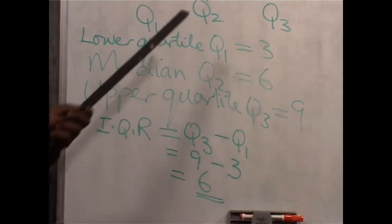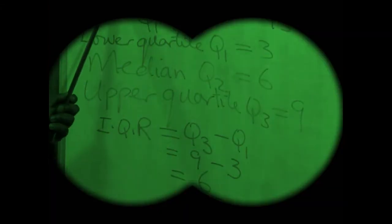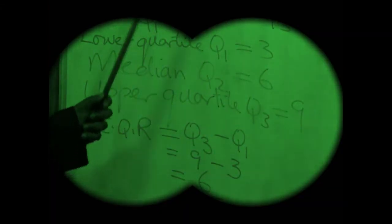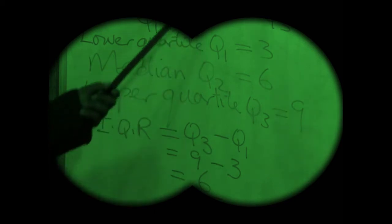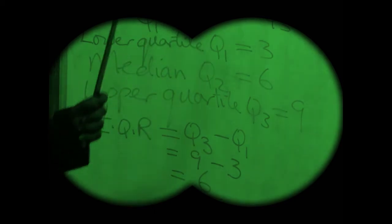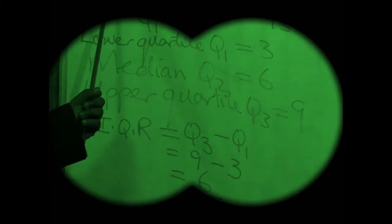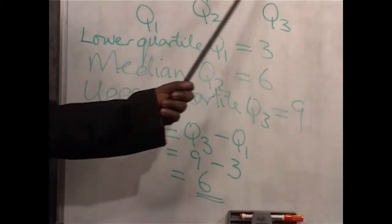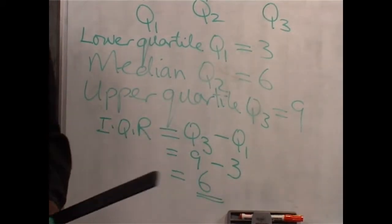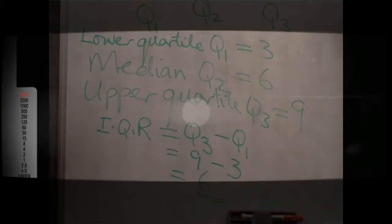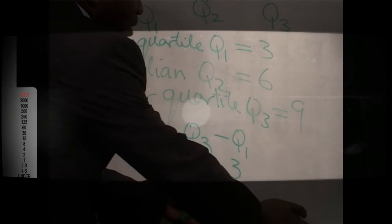This was easy because we had an odd number of measures — we had 7 of them. So picking the median was straightforward: the middle number. Suppose we have an even number of measures. How would we find the median and the quartile?